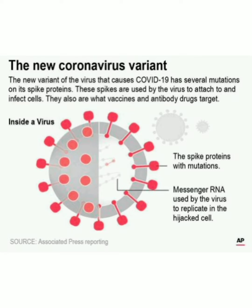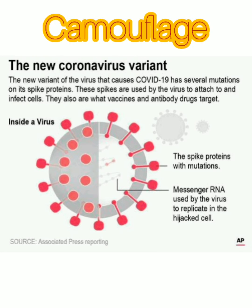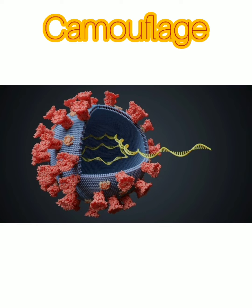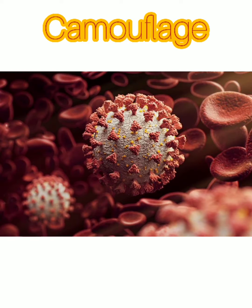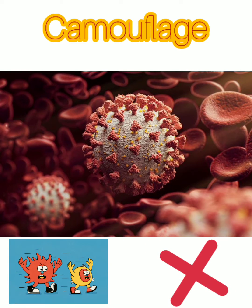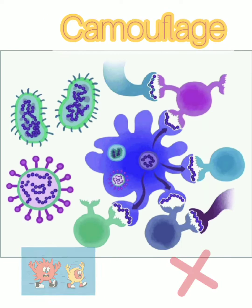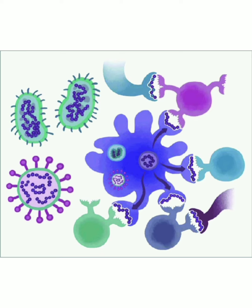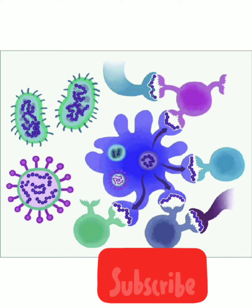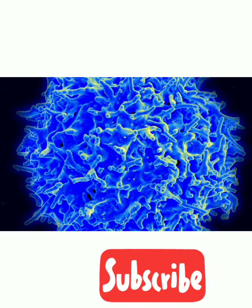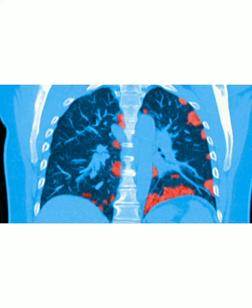When the mutated COVID strains replicate in our body, they resemble our own body cells. So our body's immune system is unable to recognize them as foreign particles, and our body will not be attacking or killing the viruses. Thus, the virus escapes our immune system but is still able to damage our cells and body systems.